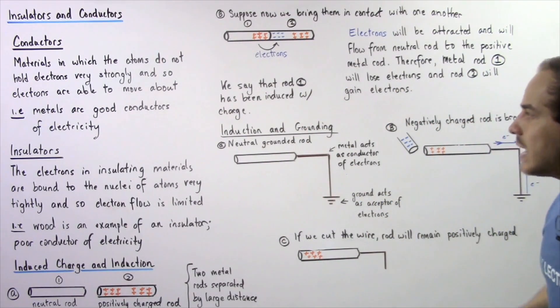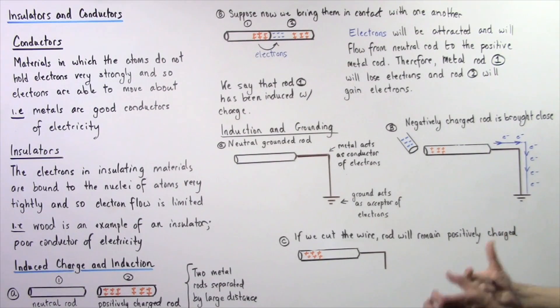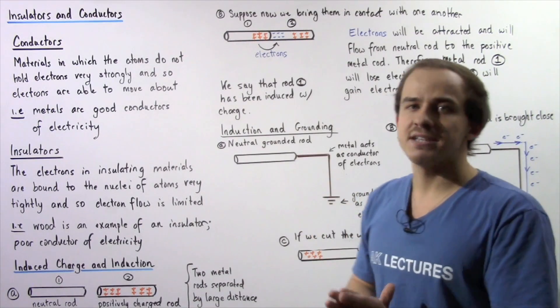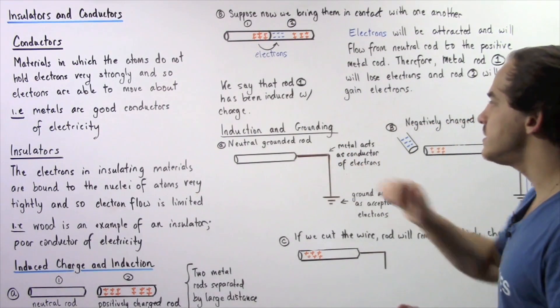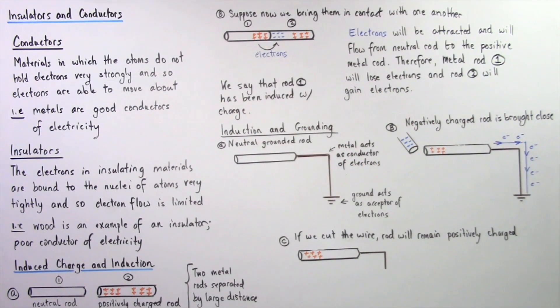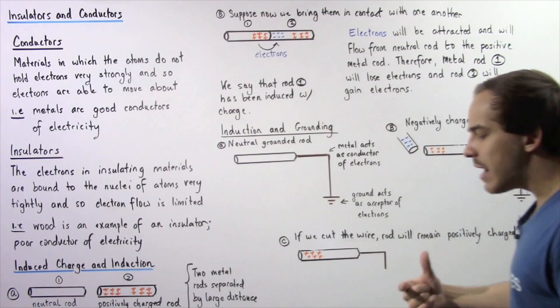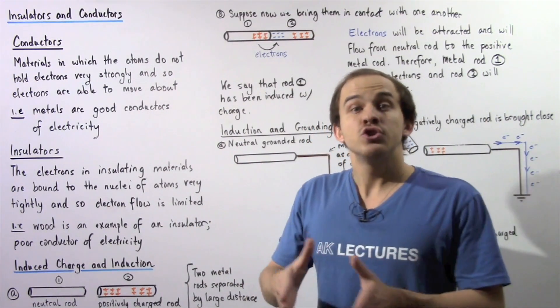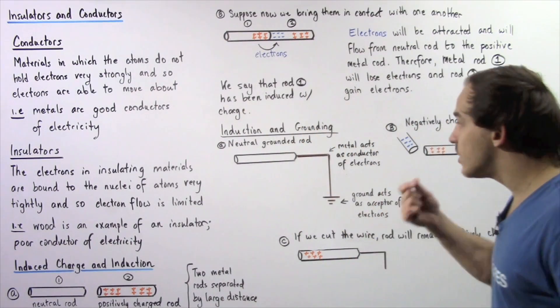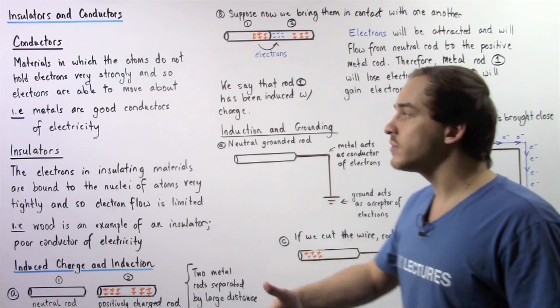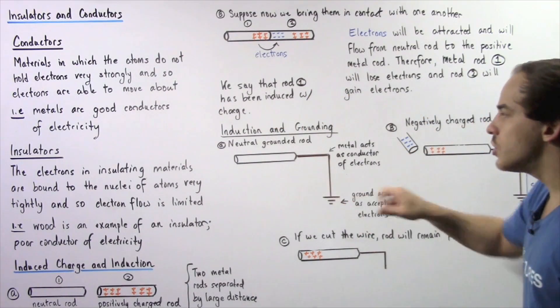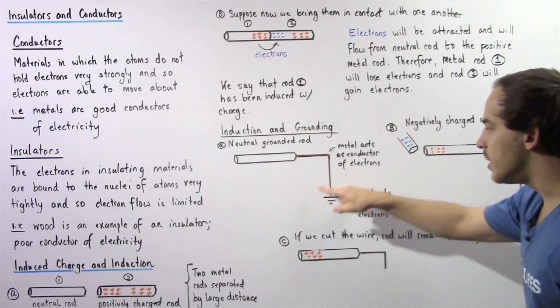Now another type of induction exists in which we don't actually have to bring these two objects in physical contact with one another. So let's examine induction and grounding. Whenever we ground an object, we essentially connect that object to the ground. We take a wire, we take some type of conducting material, and we connect our rod to the ground.